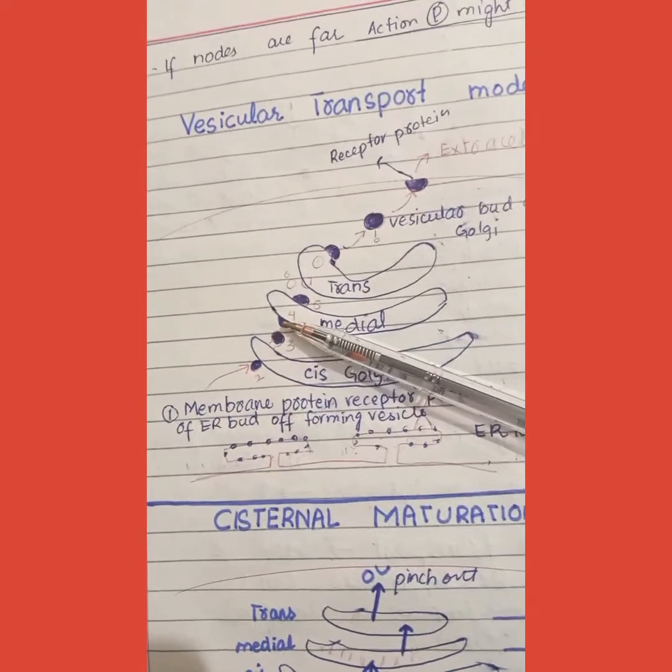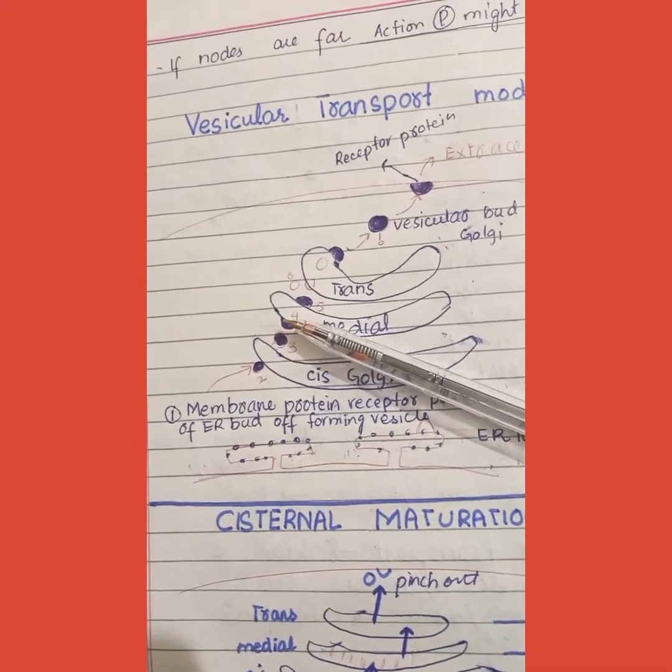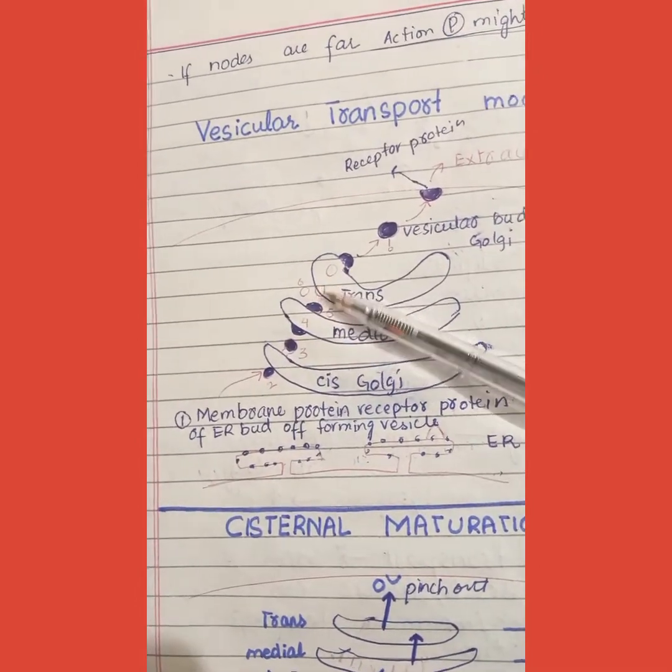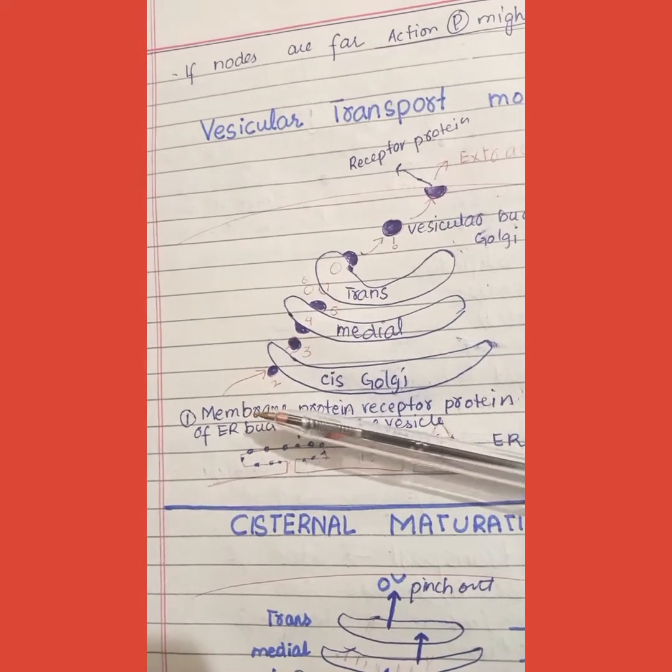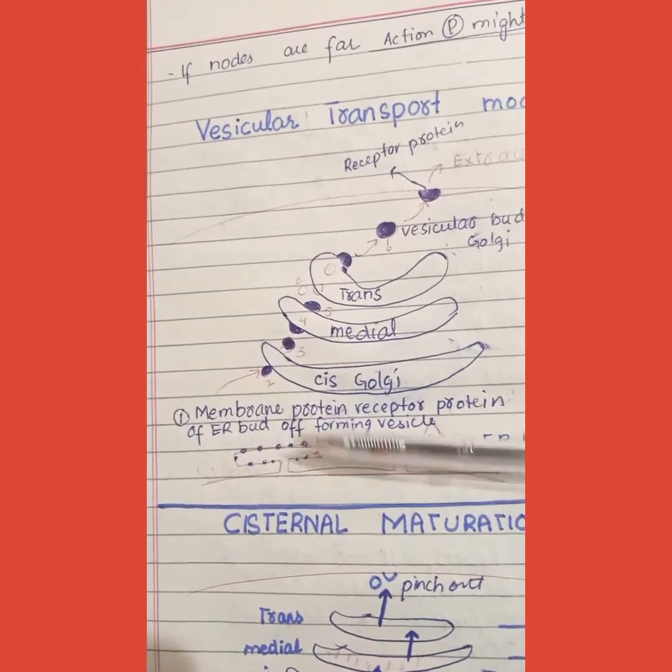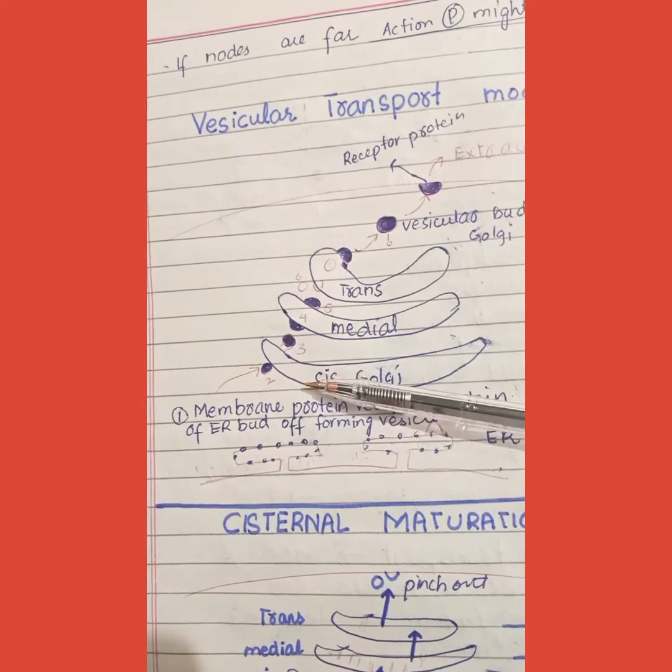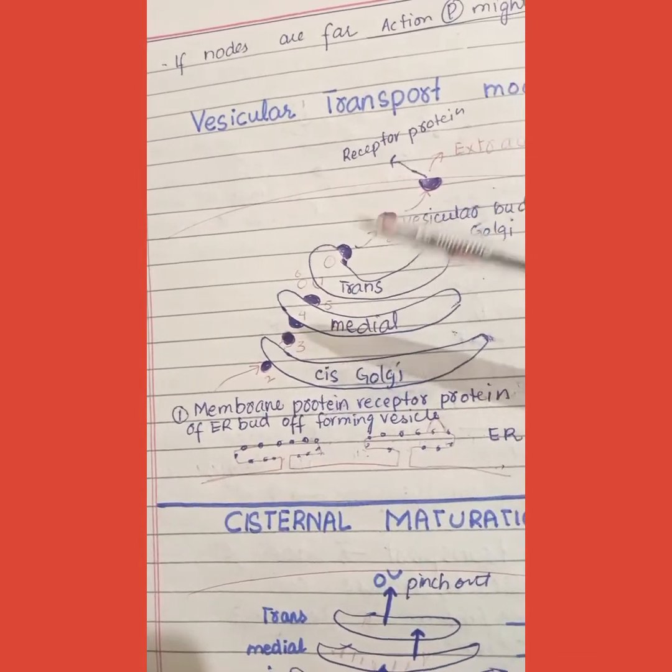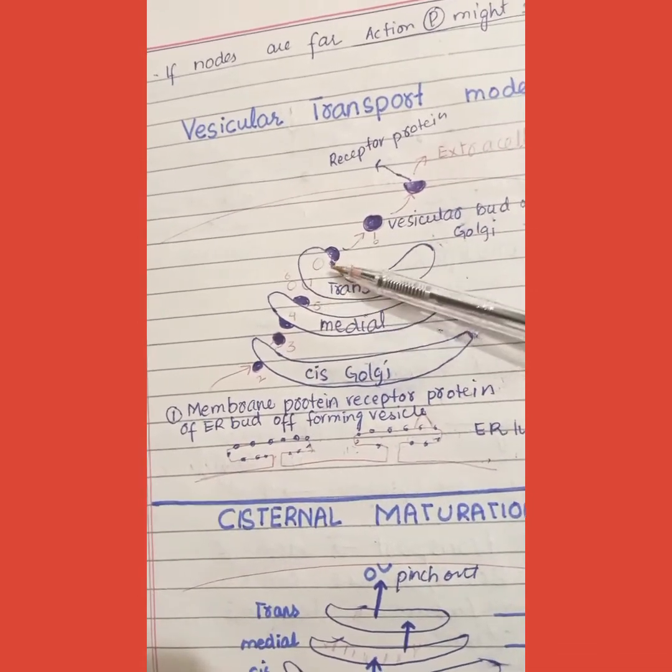It will then be made with the trans Golgi. The protein is transferred from the endoplasmic reticulum to the cis Golgi, then to the medial Golgi, and then to the trans Golgi.